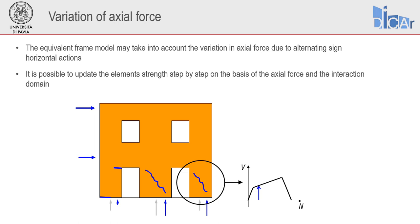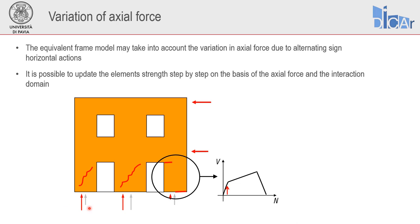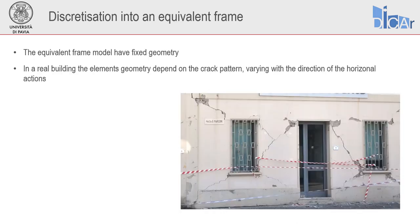The equivalent frame model takes into account the variation in axial force due to alternating seismic horizontal actions, updating step by step the element strength on the basis of axial force variation. When horizontal actions are applied from left to right, a wall may be governed by a shear mechanism, while when forces have the opposite sign — due to lower axial force — the same pier may experience a flexural behavior. On the other hand, the geometry of the equivalent frame is defined and cannot be changed during the analysis, which can be an issue.